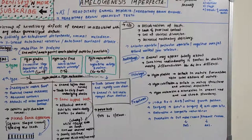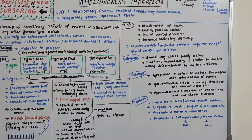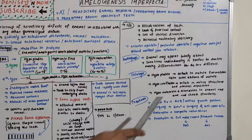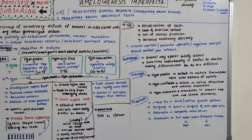Histologically: in hypoplastic AI there is a defect in matrix formation, sometimes with total absence of matrix. In hypocalcified AI there are defects in matrix structure and mineral deposition. In hypomaturative AI there is alteration in enamel rods and rod sheath structures.